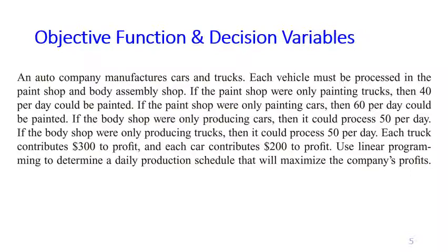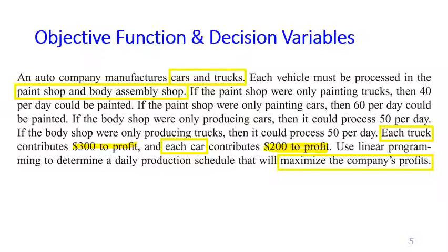Let's start defining the objective function and decision variables. Sometimes I start from the objective function rather than the decision variables — you may do whichever you prefer, just make sure both are correct and complete. The problem says we need to maximize profit. Where does the profit come from? Selling a truck gives 300 to profit for each truck, and 200 for each car.